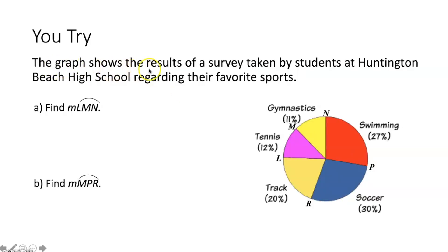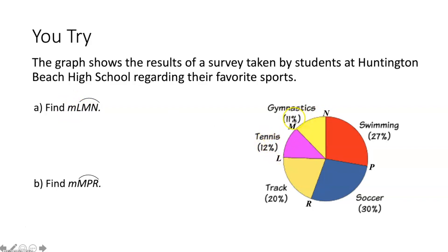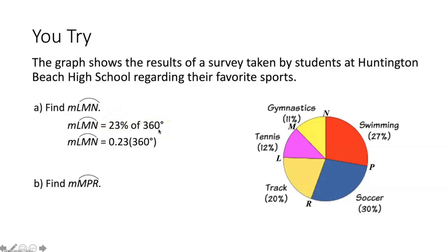Now doing the same thing, except this time with a graph showing students' favorite sports, and we want to find the measure of arc LMN, which is a minor arc. We figure out what percentage of the circle arc LMN makes up — 12% plus 11% equals 23%. Taking 23% as a decimal, 0.23, and multiplying by 360 degrees, we get that the measure of arc LMN is 82.8 degrees.